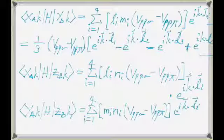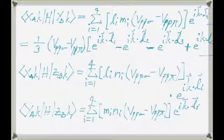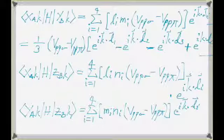For ⟨Py_A|H|Pz_B⟩, replace L with M: sum_i M_i·N_i × (V_PP_sigma − V_PP_pi) × e^(iK·D_i). That's pretty much all we need. Next time we'll construct the Hamiltonian and start looking at it at high symmetry points. For the homework, while we're doing silicon, you'll be doing graphene — since it's only two-dimensional with three nearest neighbors and one type of orbital, it's a little easier.